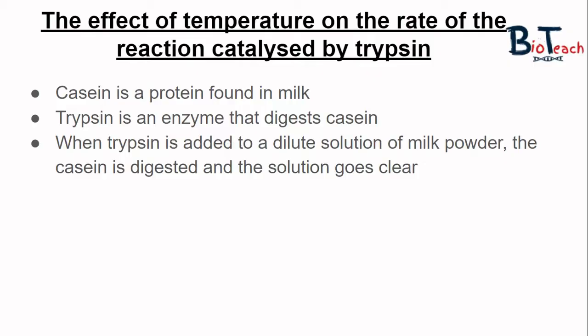Trypsin is the enzyme that helps digest proteins and it is produced in the pancreas. The protein that trypsin will digest in this experiment is known as casein, which is the main protein that's found in milk. The theory behind this practical is that when we add trypsin into a dilute solution of milk powder, the casein will be digested and the solution will go clear.